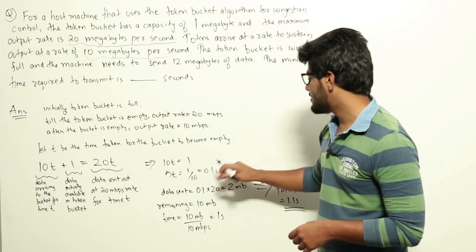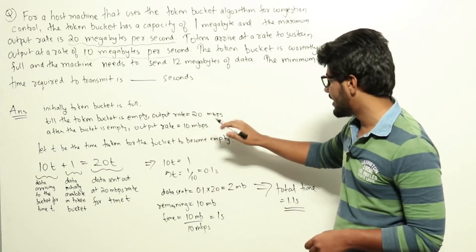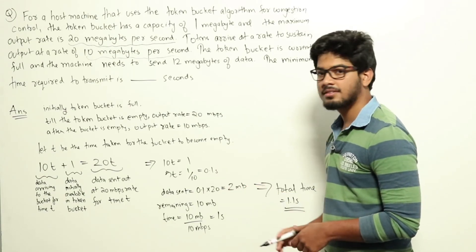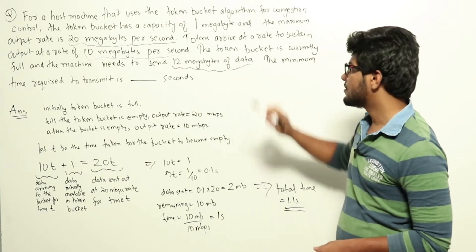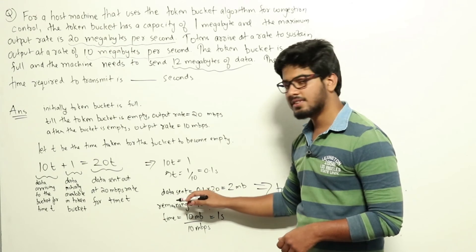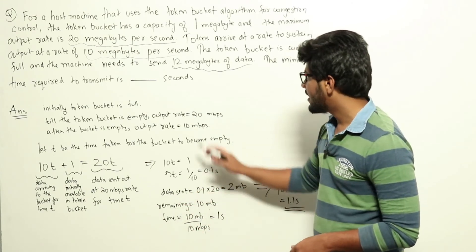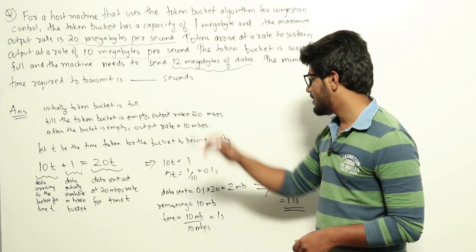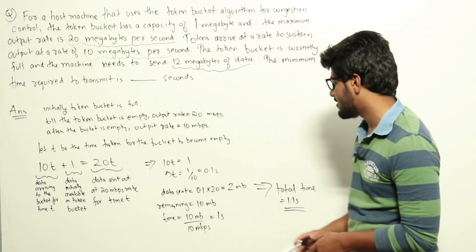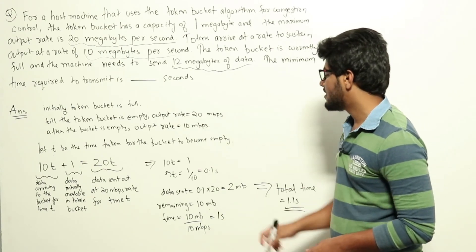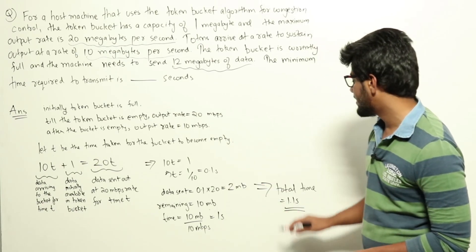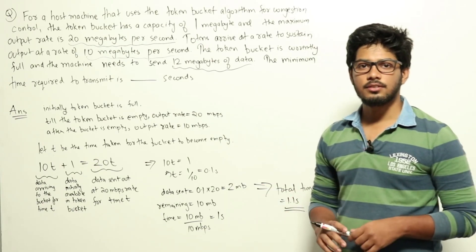The data sent in the first 0.1 seconds at 20 megabytes per second is 0.1 × 20 = 2 megabytes. We had a total of 12 megabytes to send, so the remaining data is 10 megabytes. After 0.1 seconds the bucket is empty, so we can only output at the input rate of 10 megabytes per second. The remaining 10 megabytes at 10 megabytes per second takes 10/10 = 1 second. Therefore, the total time is 1 + 0.1 = 1.1 seconds.